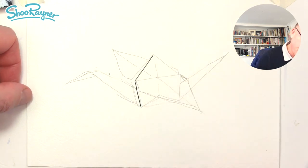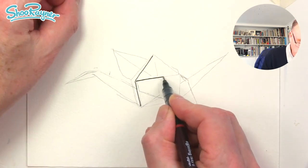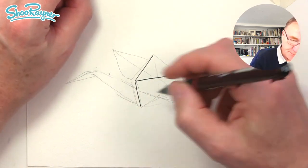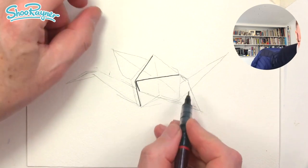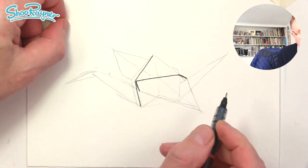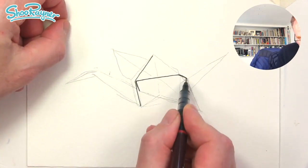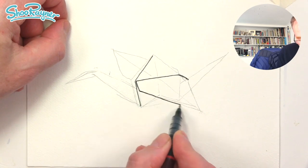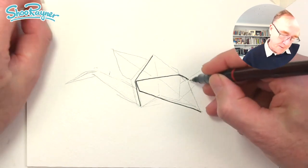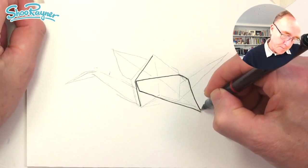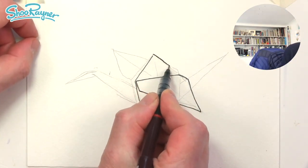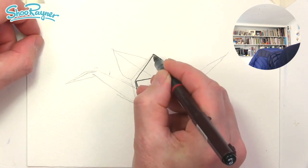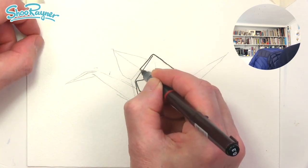We'll draw that as well and we can draw the wings coming out like this, maybe a bit further, and then come just above there down to there.